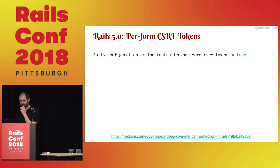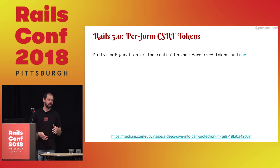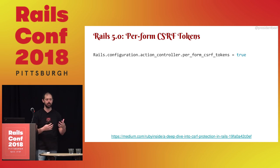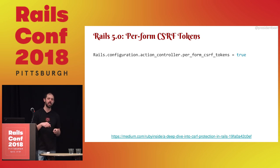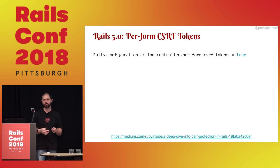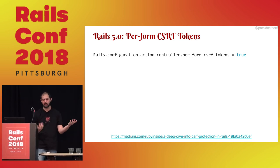Rails 5.0 added per-form CSRF tokens. If you don't turn this on, a user has one token for all their POST requests for their whole session. With this on, each form gets its own token — so if you steal one CSRF token from a page, you can only use it for that one form. It kind of restricts the use of stolen CSRF tokens, which are pretty hard to steal anyway.